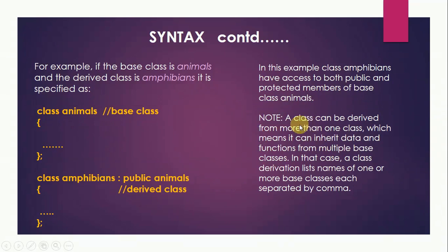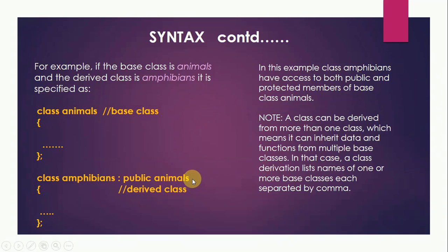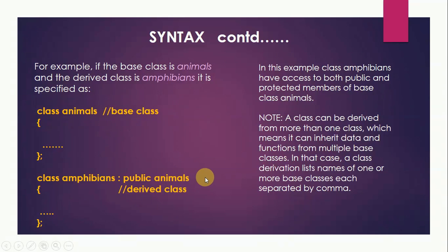It is very important to note that a class can be derived from more than one base class, which means it can inherit data and functions from multiple base classes. If a class is inheriting from more than one class, we can give the names of multiple base classes separated by commas. We give the access specifier and name of another base class after a comma. So we can give names of multiple base classes here, all separated by commas.